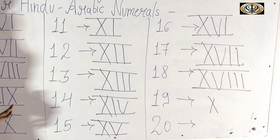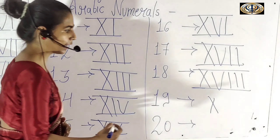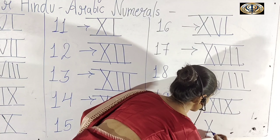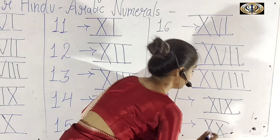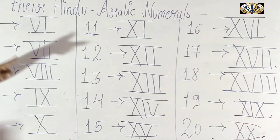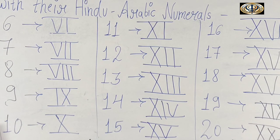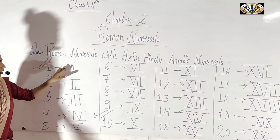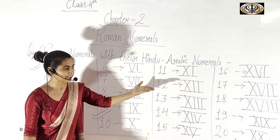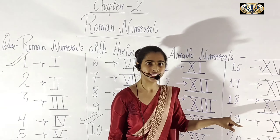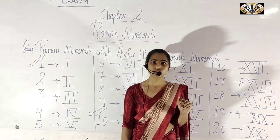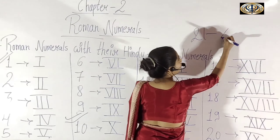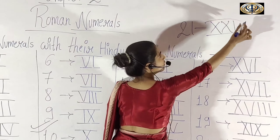9 ka Roman number kya aya? IX — pichy ke side padh kar dheke. So 19 ka Roman number XIX hoga — X aur phir IX. So 19 ka Roman number XIX. 20 ka hota hai XX. So much for now.